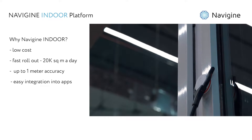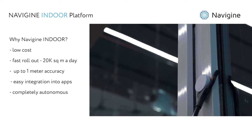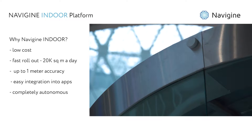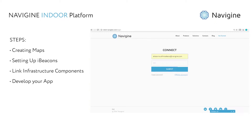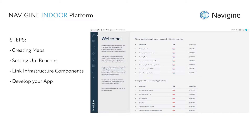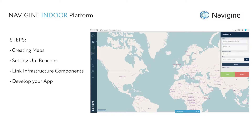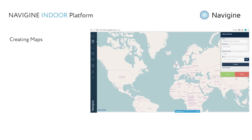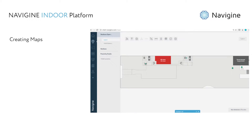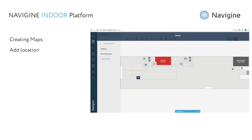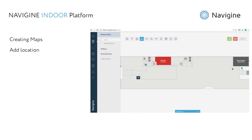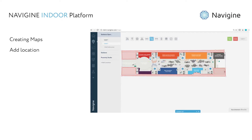It doesn't require an internet connection because all calculations are performed on the mobile device. There are only four simple steps for a successful navigation setup. First, upload your map to the Navigen web dashboard, add locations in the locations tab, and draw routes and barriers.